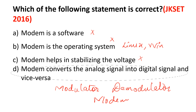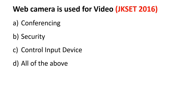Next question: A web camera is used for — video conferencing, security control, input device, or all of these? On laptops and mobiles we have a web camera. It is used for conferencing — for example, during COVID, students took online classes via Zoom. It is also used for security. A web camera is also an input device. The right answer is all of these.